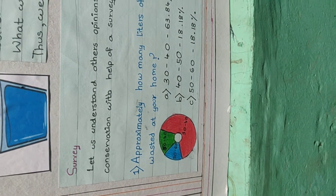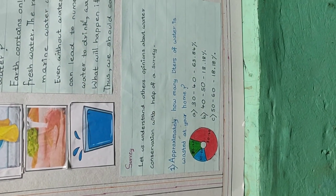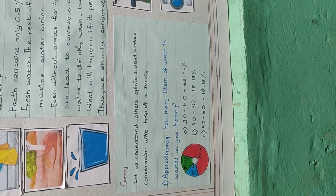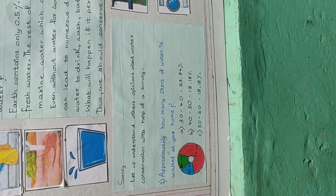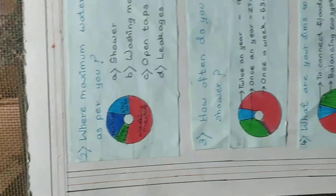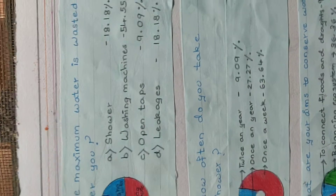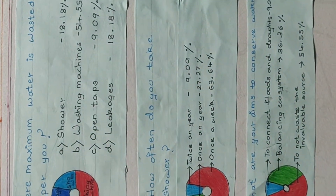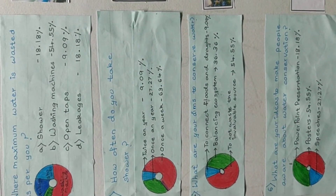Survey: I conducted a survey using the SurveyMonkey site and received responses. Approximately how many litres of water is wasted at your home? 30 to 40 litres was the answer supported by 63.84%. Where is maximum water wasted? Washing machine was the answer supported by 54.55%. How often do you take a shower instead of using a bucket of water? Once a week was the answer supported by 63.64%.